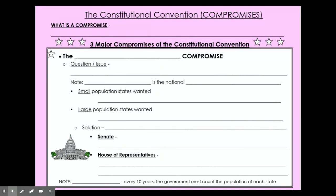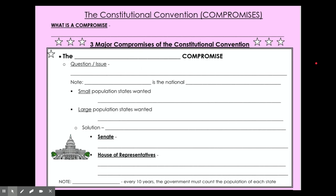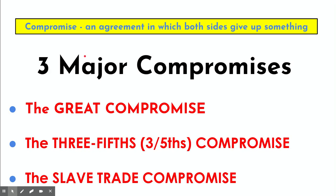Now on to the back. There are many compromises made during this convention — three big ones you need to know about. A compromise is an agreement in which both sides give up something in order to reach the agreement. There are three major compromises: the Great Compromise, the Three-Fifths Compromise, and the Slave Trade Compromise — one for each box on the note sheet.